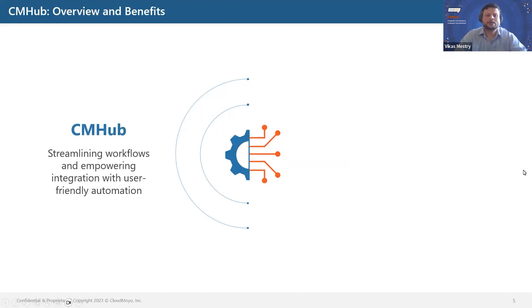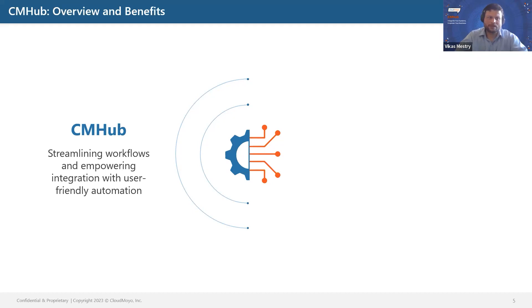So what we came up with at Cloudmoyo is CM Hub. CM Hub is a cutting-edge software platform designed to streamline business processes by automating workflows. It features a user-friendly low-code visual builder that empowers businesses to easily integrate and exchange data with systems and beyond, helping you integrate with different third-party vendors and systems using CM Hub.